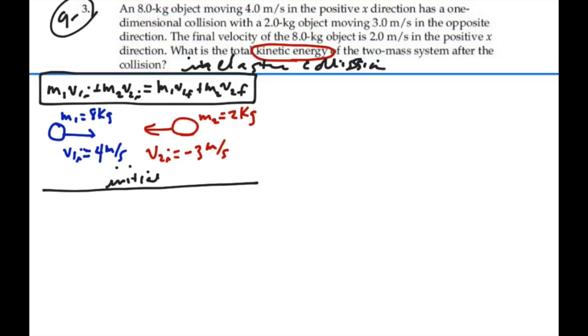And then after the collision, we've got mass 1 continuing in the positive x direction. So V1 final is positive 2 meters per second.